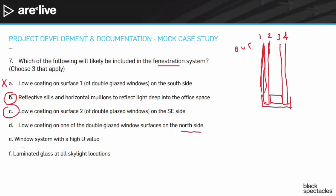Answer E: window system with a high U value. That sounds good until you realize — the R value is what I want high. R and U are inverses of each other: R equals one over U, and U equals one over R. So if I want good resistance to heat flow — a high R for resistance — I'm actually looking for a very low U value in the windows. So answer E is backwards and no good.